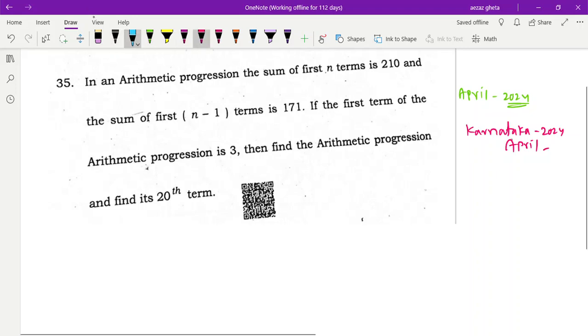It is from AP, it will be helpful for your FA which are going on in your school, I think. In an AP the sum of n terms is given, like Sn is equal to 210, sum of first n minus 1, Sn minus 1 is equal to 171, first term is 3.